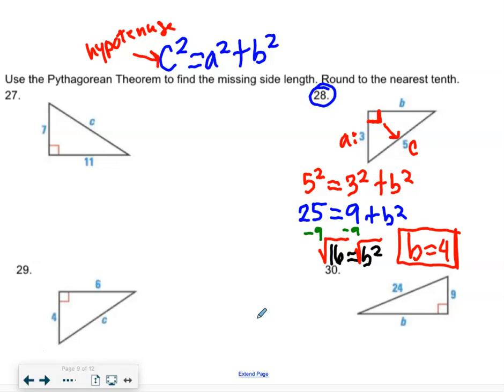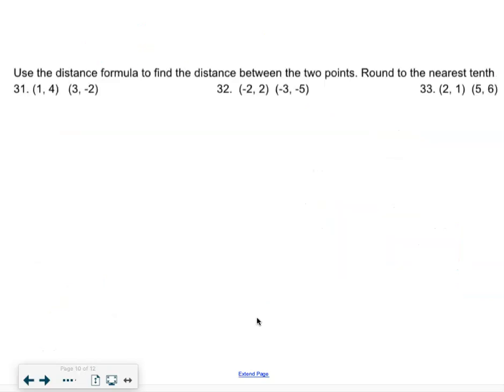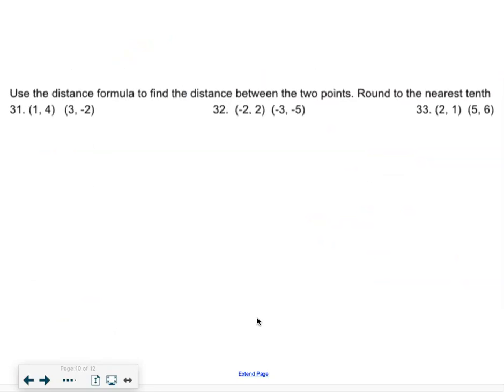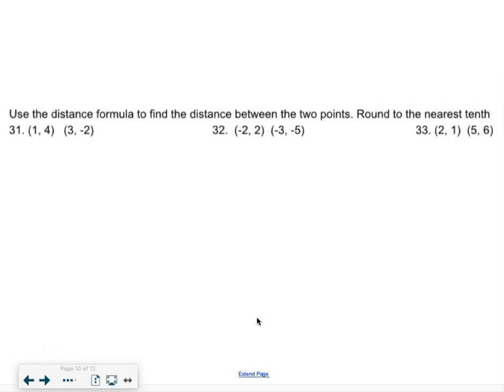I think you guys will be pretty good with the Pythagorean Theorem. So let's move on to our next section. Our second to last section of our packet here. It says use the distance formula to find the distance between the two points round to the nearest 10th. How about up by the instructions like just above it? Why don't you guys write the distance formula so it's here in your packet. So it's going to be x2 minus x1 squared plus y2 minus y1 squared. Remember that is our distance formula.